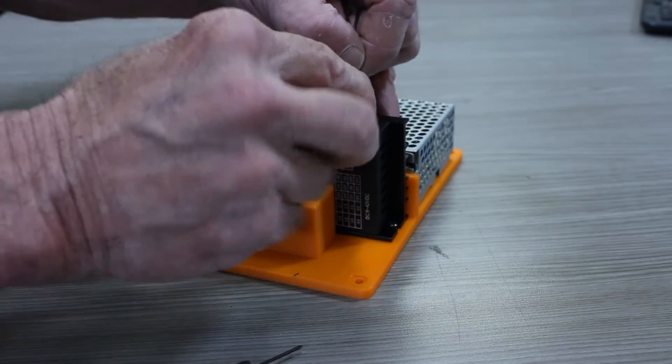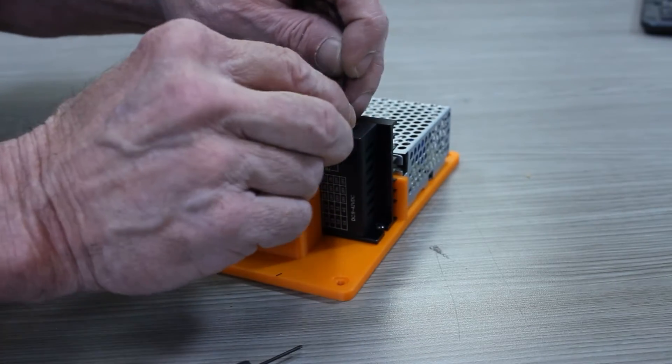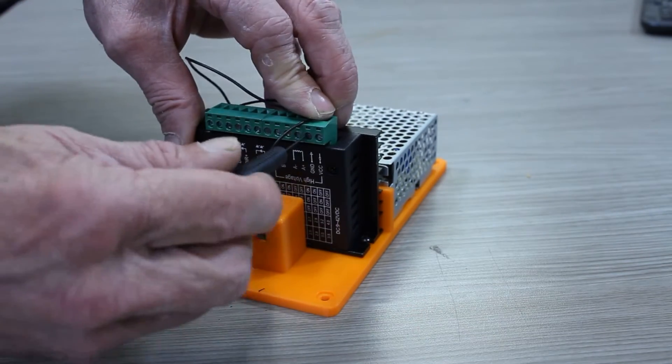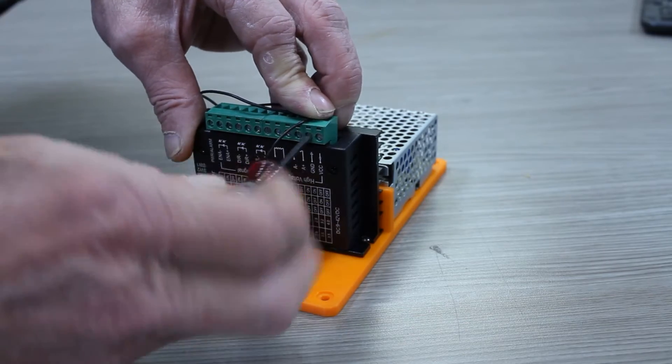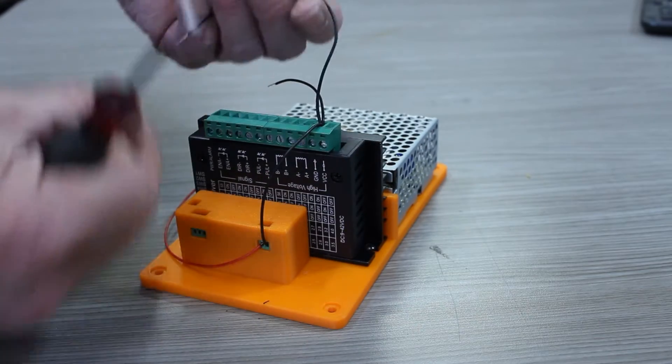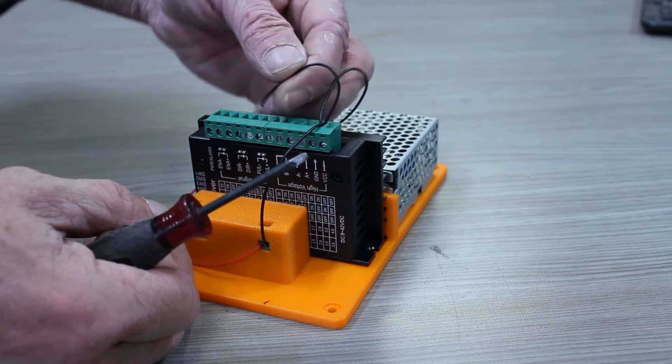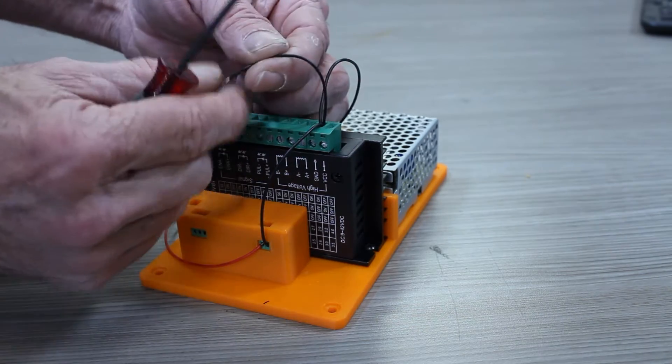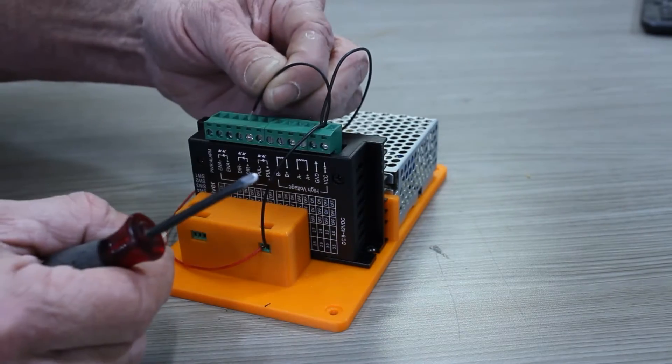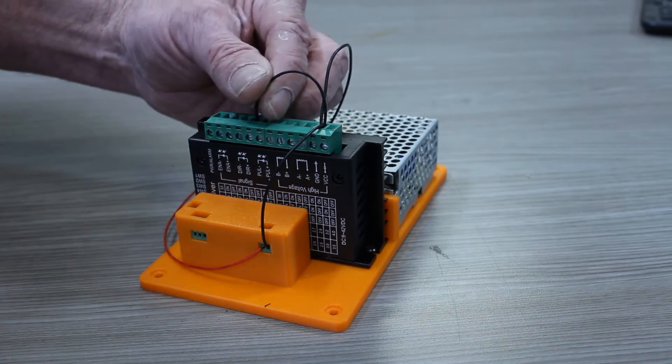So we're going to connect three ground wires. And whoops, almost put it in the wrong spot, to the ground on the stepper driver. Then this one is going to come over to pulse negative. Guess I didn't get this one tinned. That's why you want to tin your wires. Pulse negative. There we go.